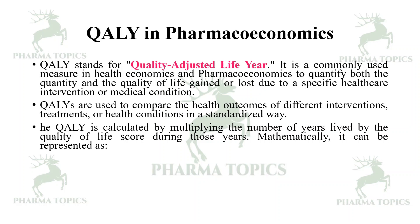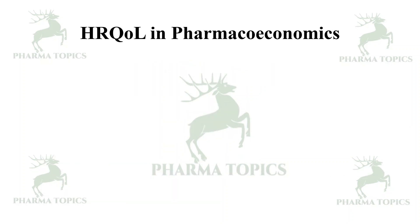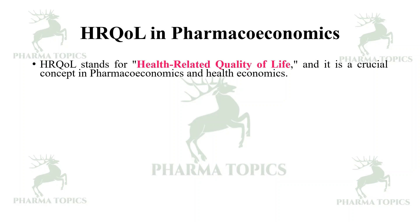The QALY is calculated by multiplying the number of years lived by the quality of life score during those years. Mathematically: QALY = Years of Life × Quality of Life Score. For example, if an individual lives for five years with a quality of life score of 0.8, the QALYs gained would be 5 × 0.8 = 4 QALYs.